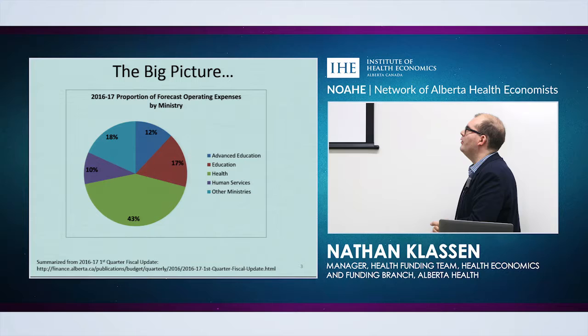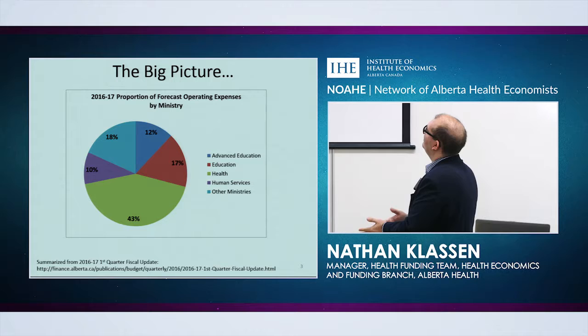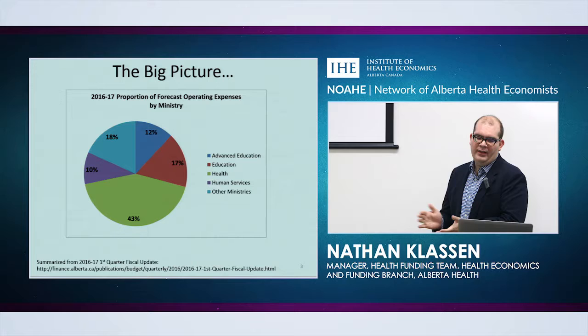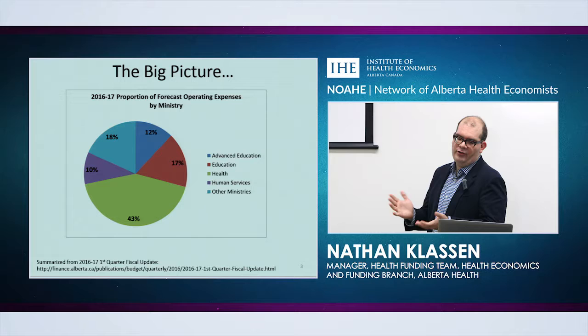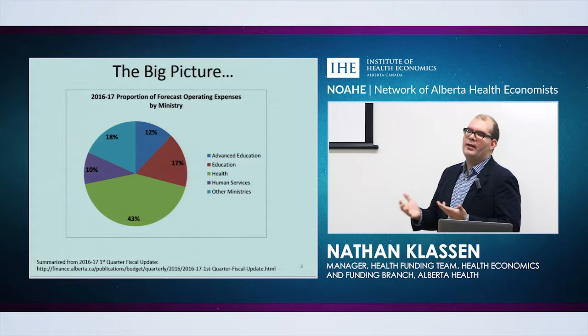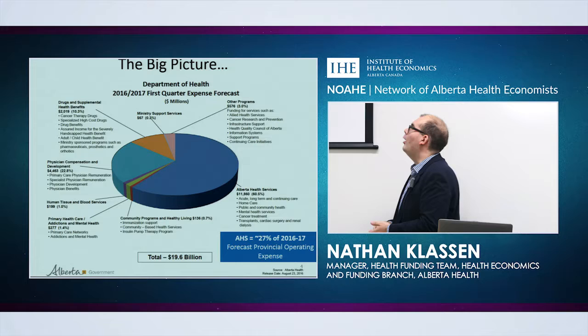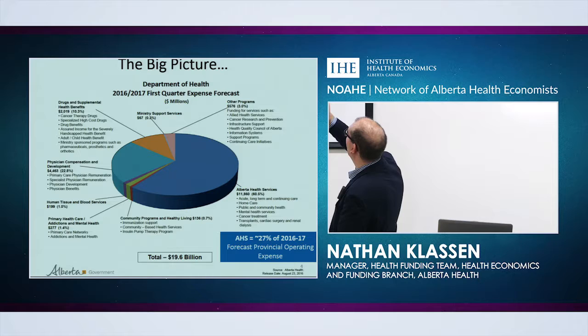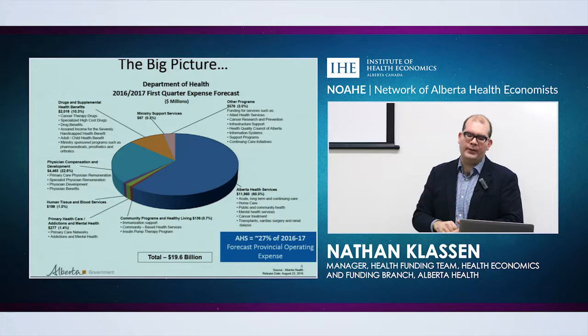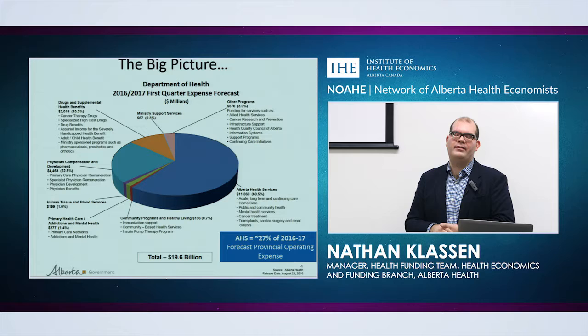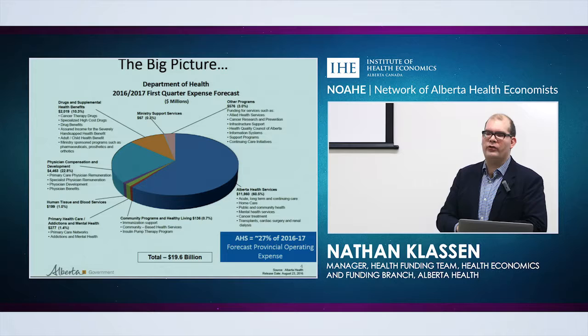Starting with some provincial context: I looked at the Quarter 1 forecast for 2016-17 and rolled up operating expenses by ministry. Advanced Education is around 12%, Education about 17%, Human Services is 10%, Health is at 43% of operating expenses, and all other ministries together are about 18%. Within Alberta Health's operating forecast, AHS receives about 60.5% of our funding — which works back to roughly 27% of provincial operating expenses, a greater expenditure than most other ministries.